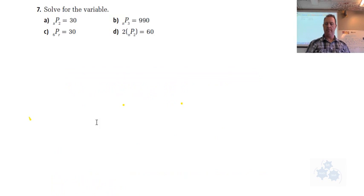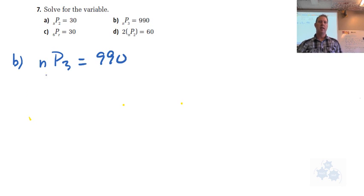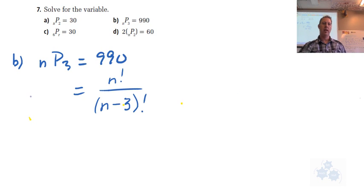So N over N minus R, right? So if we take a look at B here, we're going to focus on B, N pick three is 990. Now, you could just do trial and error, I suppose, but obviously we're trying to figure out how we can use the equation to solve, not by trial and error. Right? So NPR, generally, what was the expression for that? It was N factorial divided by N minus R, which is three factorial. And we know that that equals 990. So here's the equation that we're starting with. We're trying to solve for N.